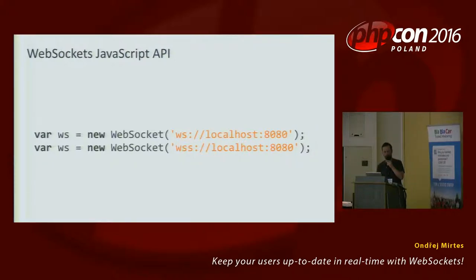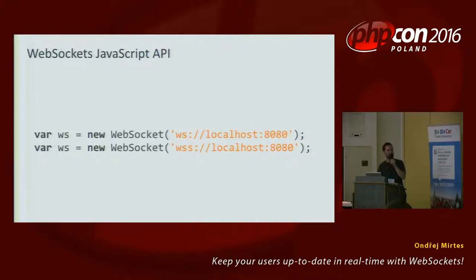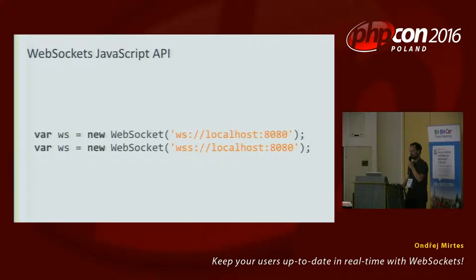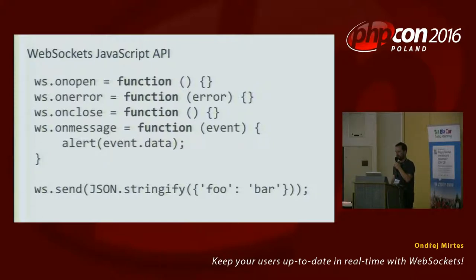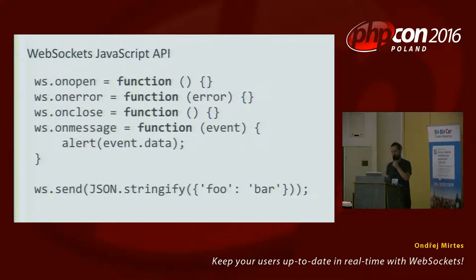WSS is the secure encrypted variant — if you can, you should use it. If your website is on HTTP, you can connect to either WS or WSS. But if you are on HTTPS, you can only connect to the secure WSS variant. The client API looks very similar to the server: you have onopen, onerror, and onmessage callbacks to react to the server's messages. If you want to send a message to the server, you use the send() method. It's really straightforward.